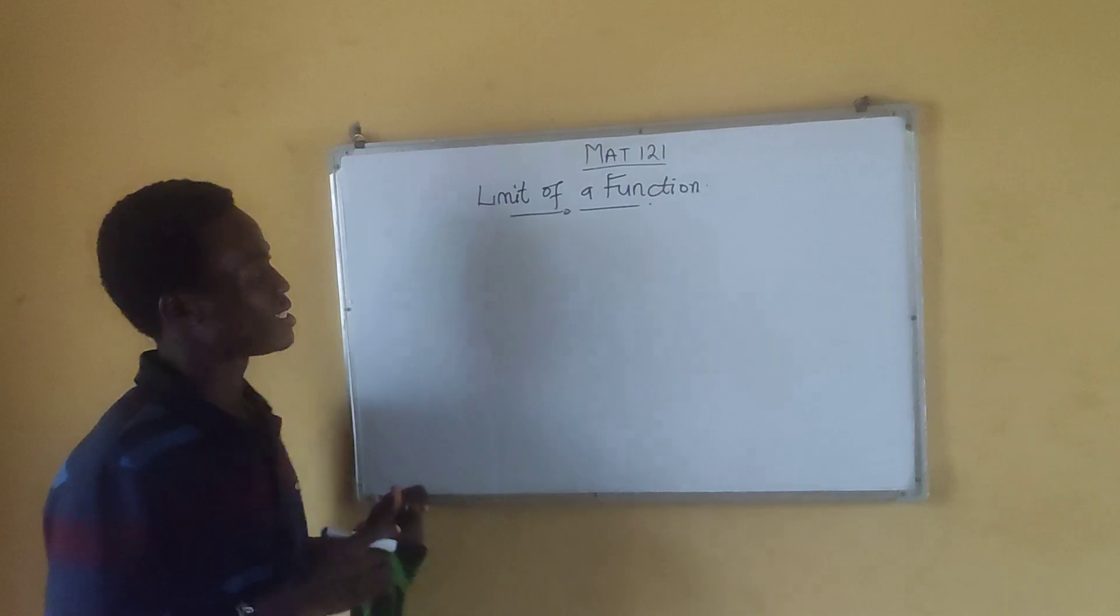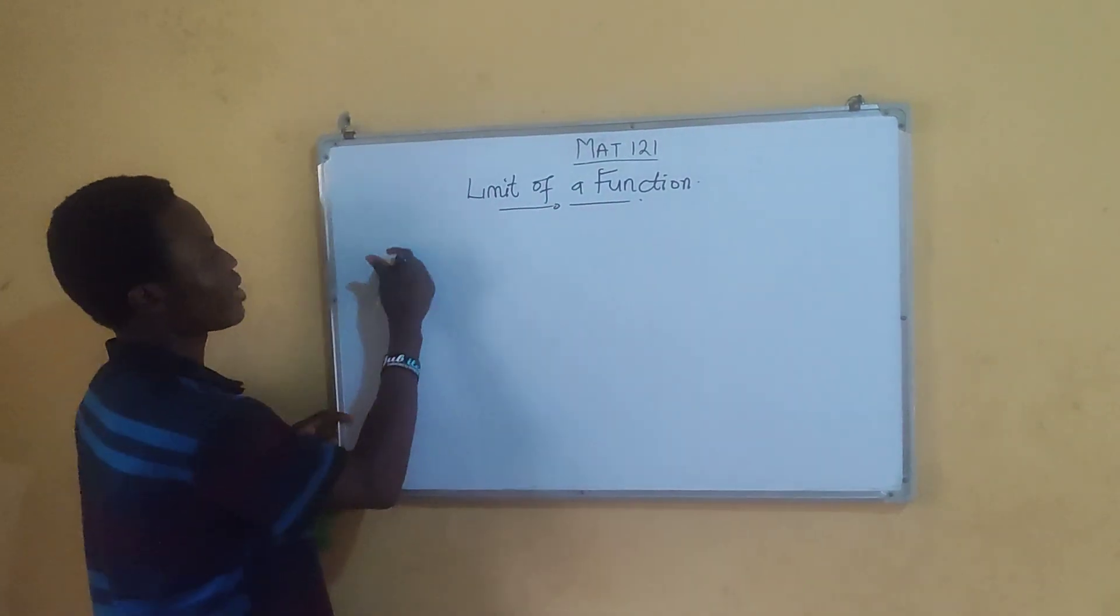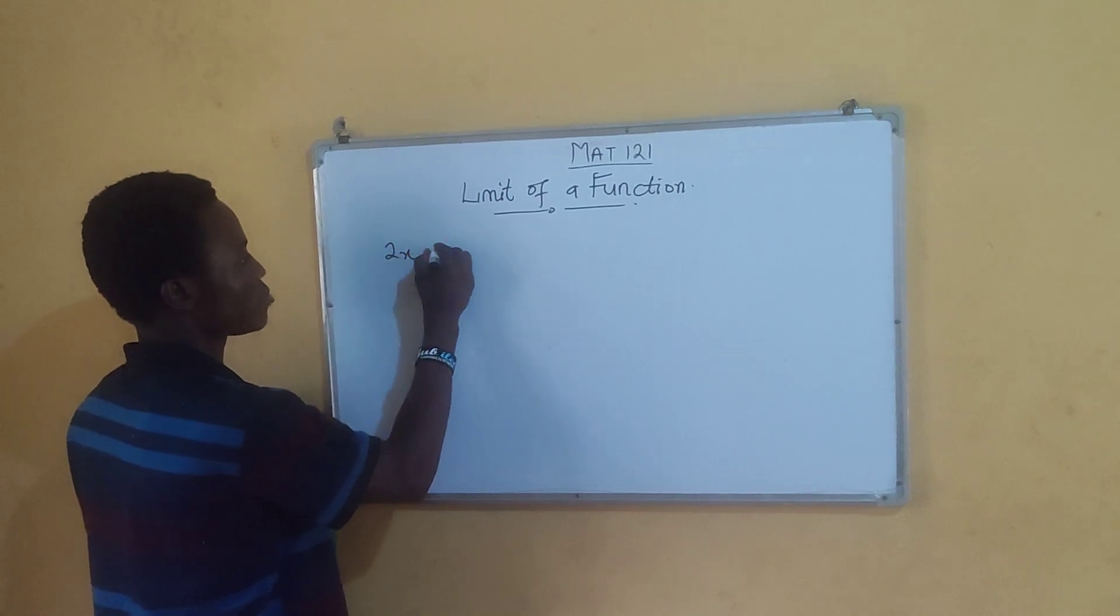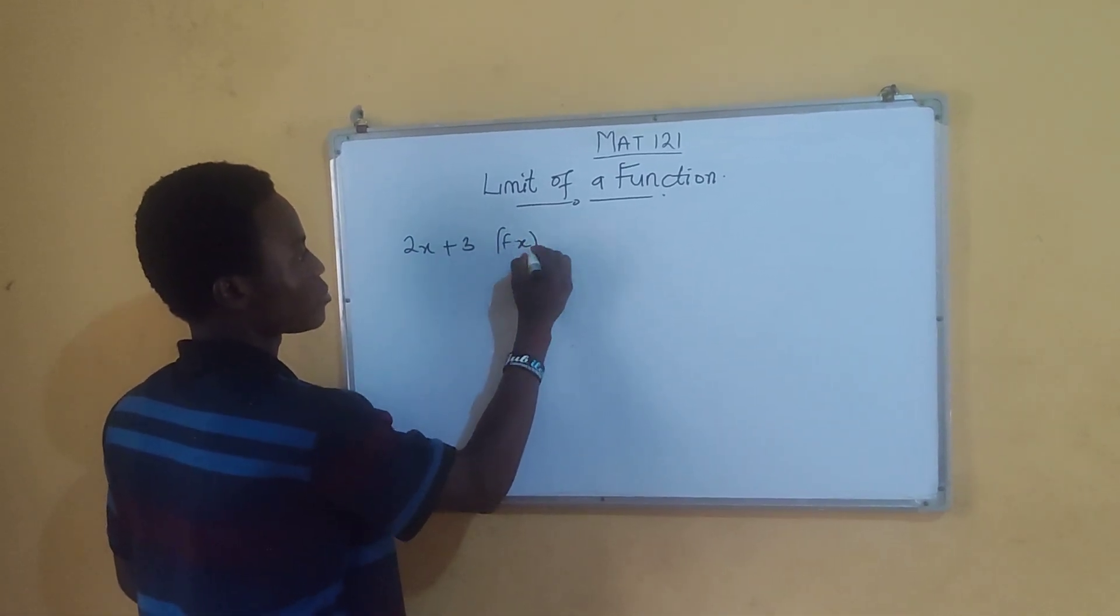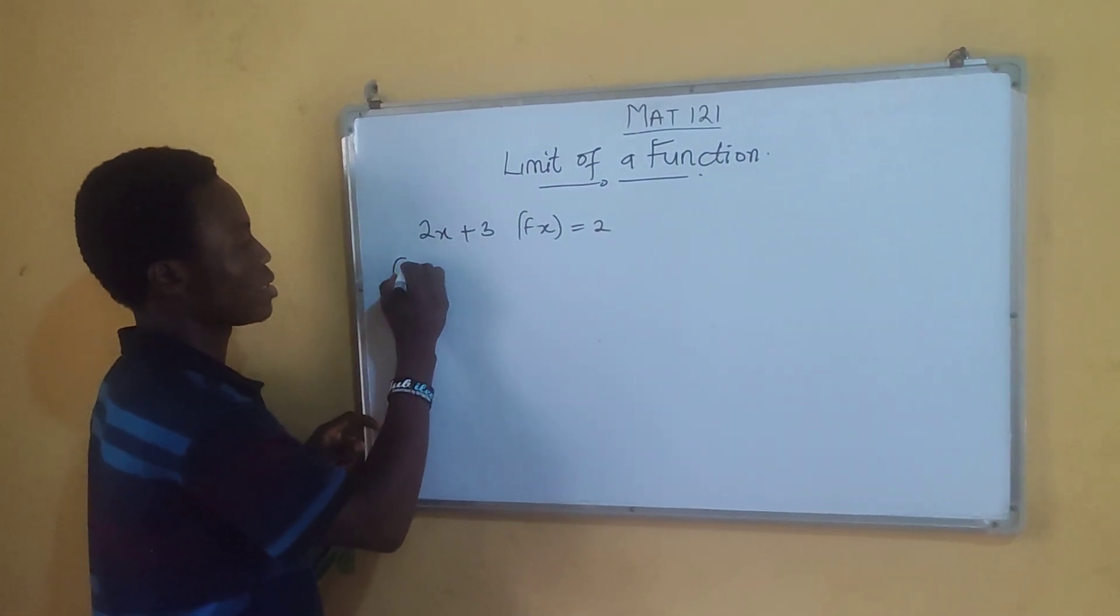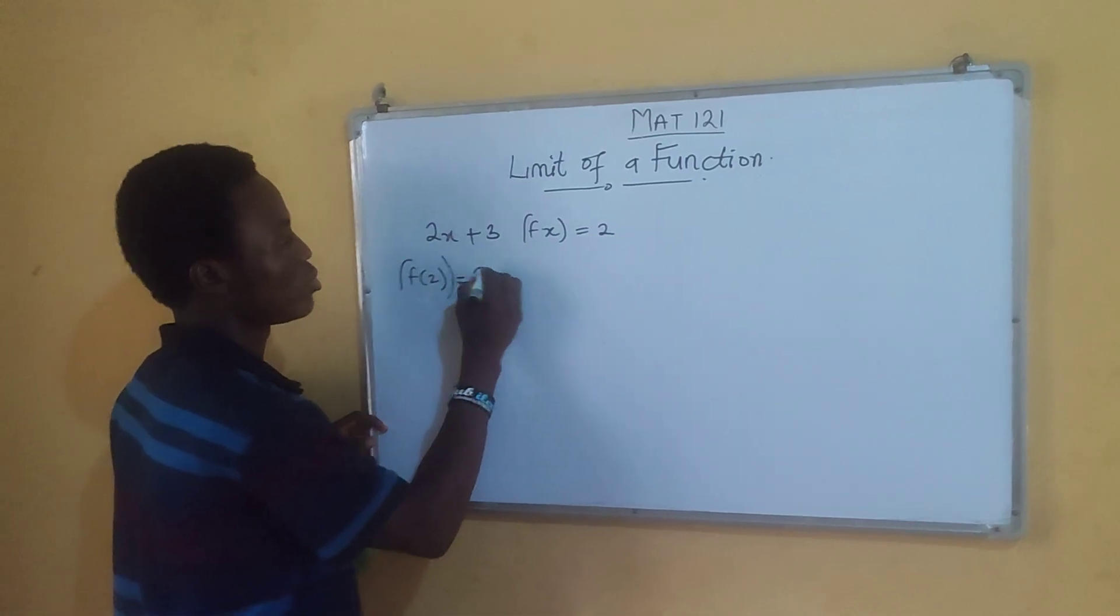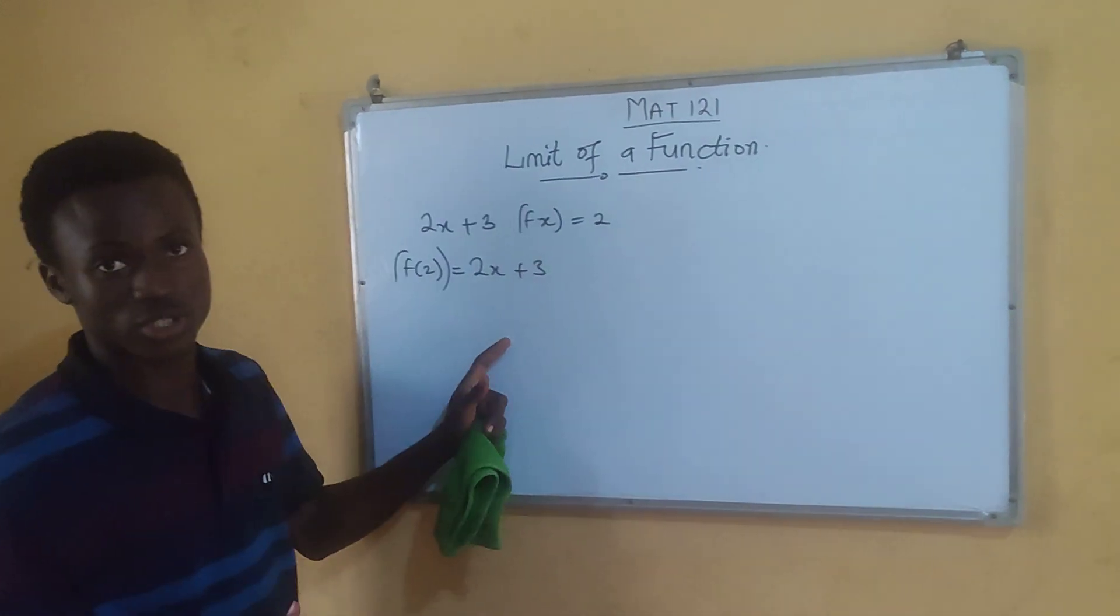Normally, there is a difference between limit and function itself. For example, we are given a question like 2x plus 3, while we tell you f of x is equal to 2, or they can write it in such a way that f(2) is equal to 2x plus 3. This is a kind of question on the function itself.